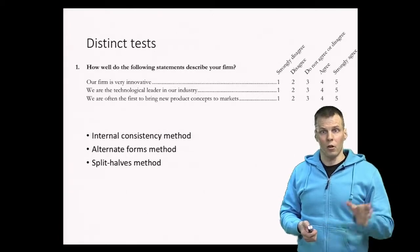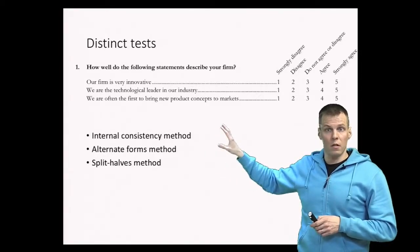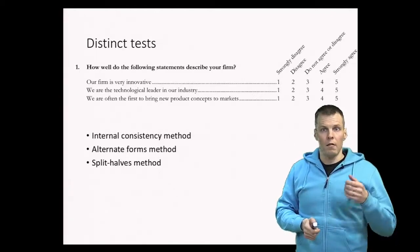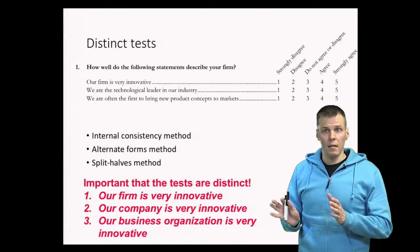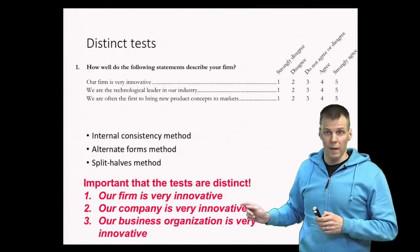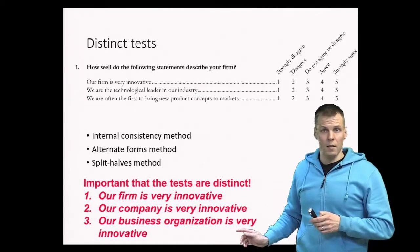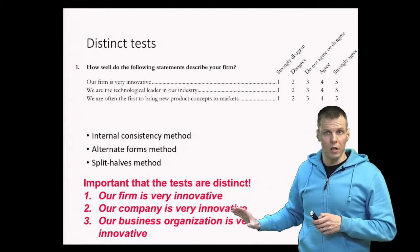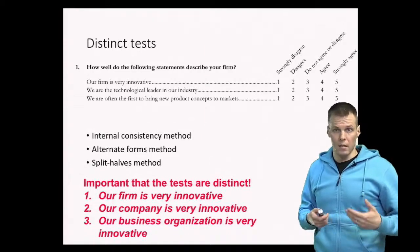These methods include the internal consistency method, the alternative forms method, and the split-halves method. Understanding exactly what each of these does is not critical; what matters is understanding the principle and a couple of statistics you can calculate, plus their interpretations. The really important part is that the tests must truly be distinct. If you just ask the same question over and over with slightly different wording — for example, 'our firm is very innovative,' 'our company is very innovative,' 'our business organization is very innovative' — those are not distinct tests. That is just asking the same question with slightly different wording, and this is something you see very commonly as a reviewer. Authors write questions that are essentially the same without paying attention to distinctiveness, and that is a significant problem in management research.